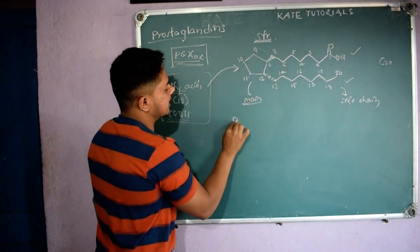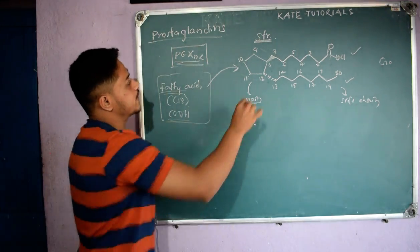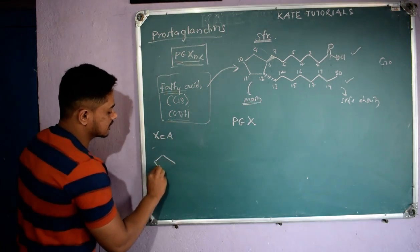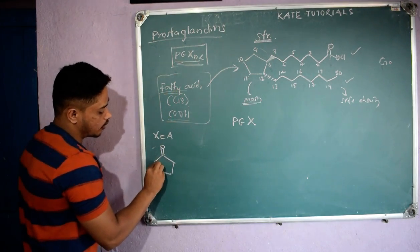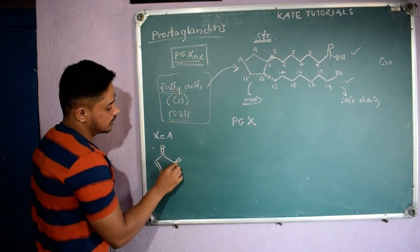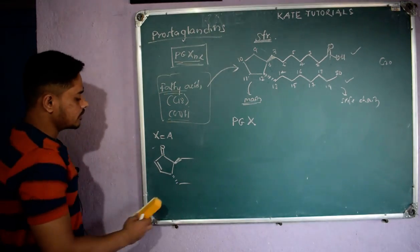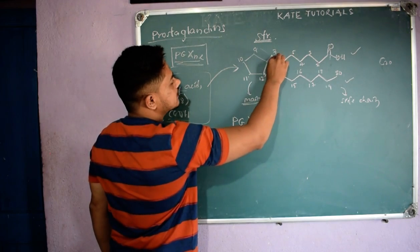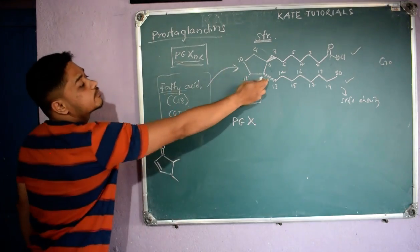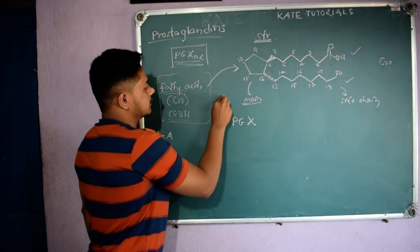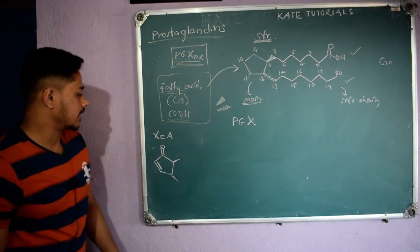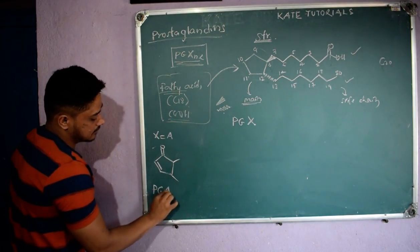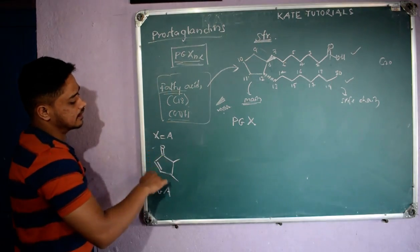PG stands for prostaglandins. X is determined by the structure of the cyclopentane ring. For example, if X equals A, then the cyclopentane ring contains a ketone group and a pi bond in specific positions. The side chains remain as they are. Also, stereochemistry is important — a dark bond means above the plane and a hashed bond means below the plane.